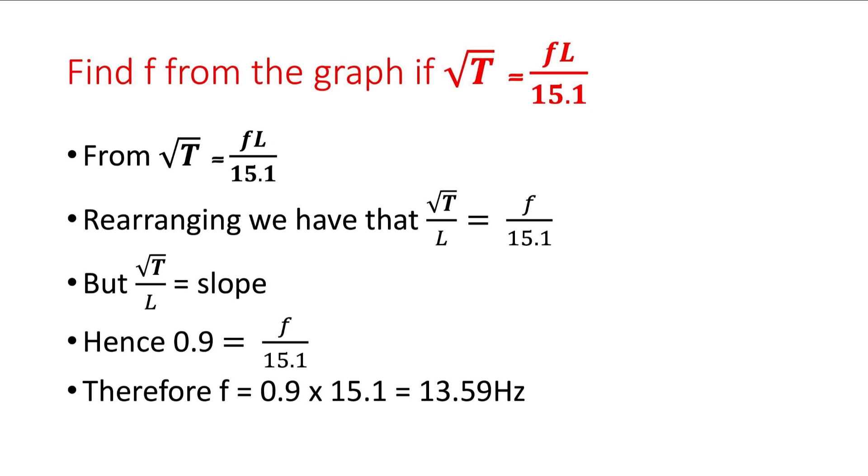Now we can substitute directly our slope. 0.9 equals F over 15.1, and then all we have to do is cross multiply, making F the subject of the formula, which equals 0.9 times 15.1, and that gives us 13.59 hertz. So the value of the frequency that we use is 13.59 hertz.